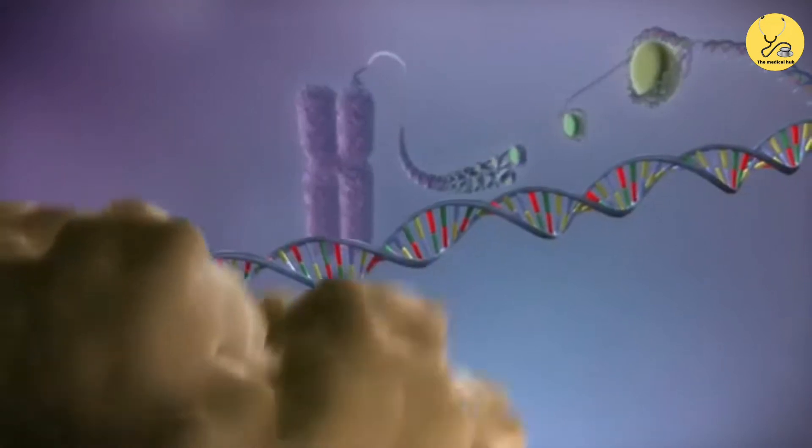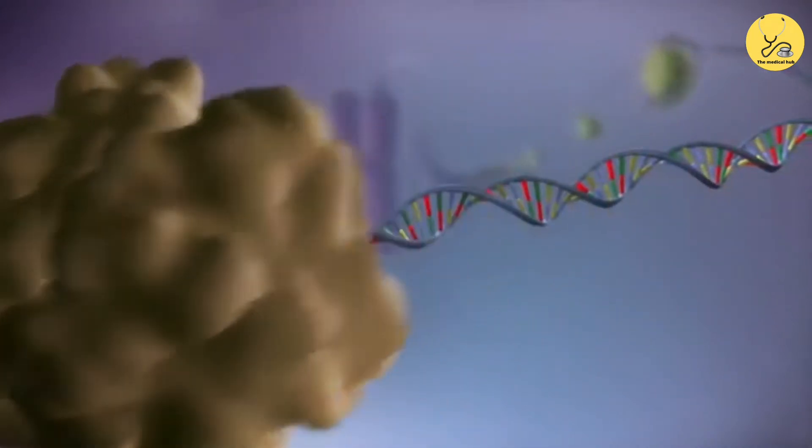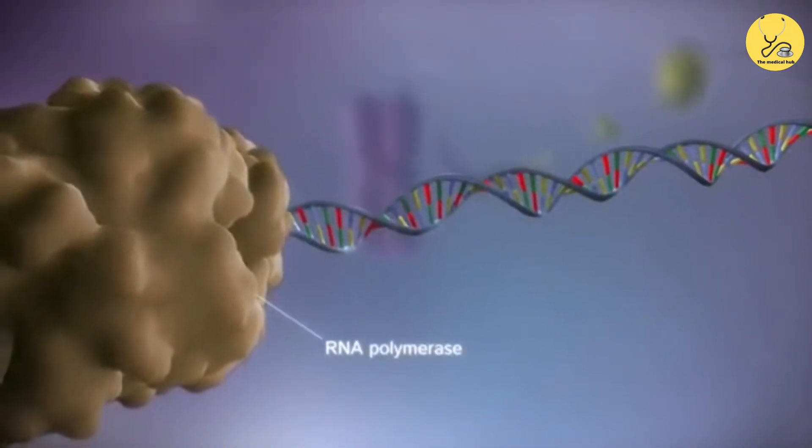When a gene is switched on, an enzyme called RNA polymerase attaches to the start of the gene.